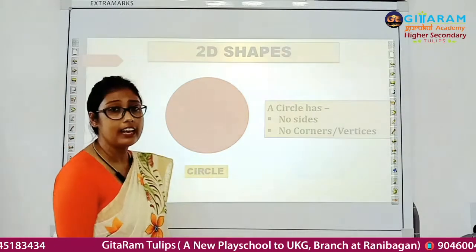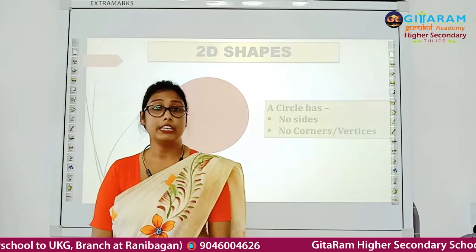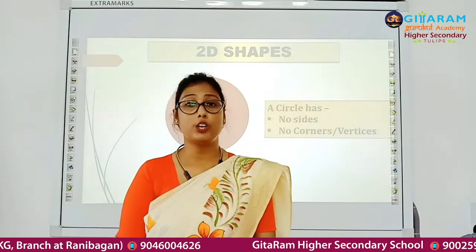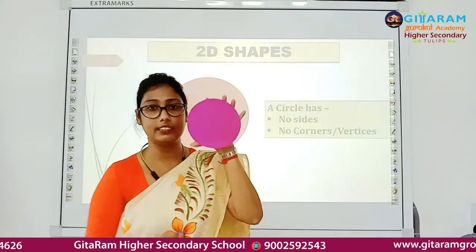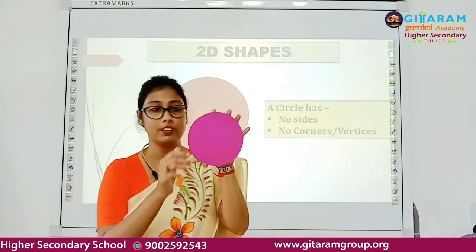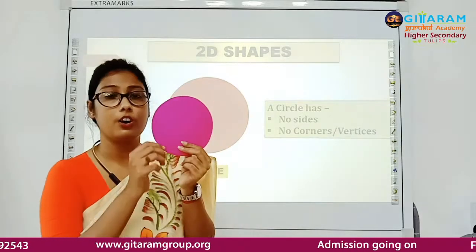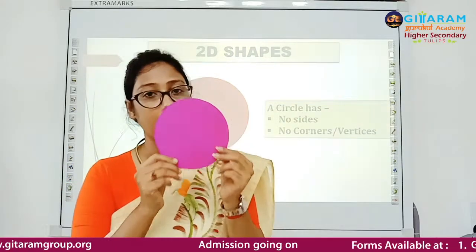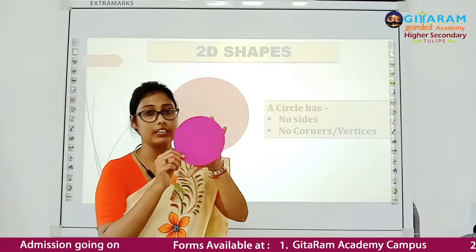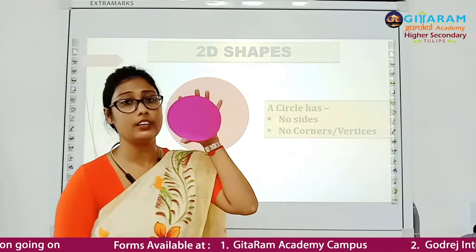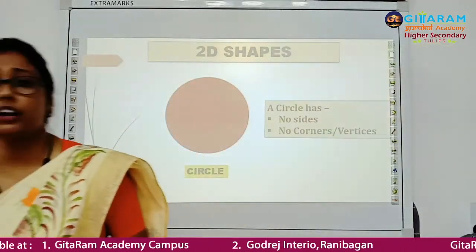Our next 2D shape is circle. Circle has no sides and no corners or vertices. It is a closed loop. It is a circle — it has no corners or vertices and no sides. It is only a closed loop.